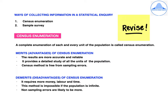Information in a statistical enquiry can be collected by census enumeration or sample survey. Census enumeration is a complete enumeration of each and every unit of the population. Merits: results are more accurate and reliable, provides a detailed study of all units, and it is free from sampling errors. Demerits: requires more money, labour and time, it is impossible if the population is infinite, and non-sampling errors are likely to be more.